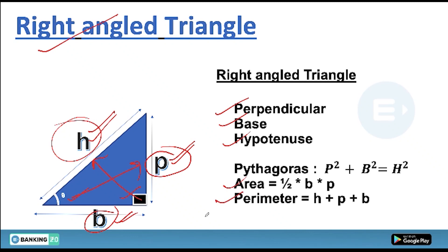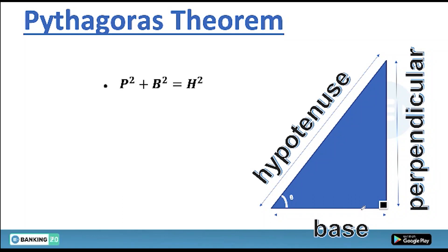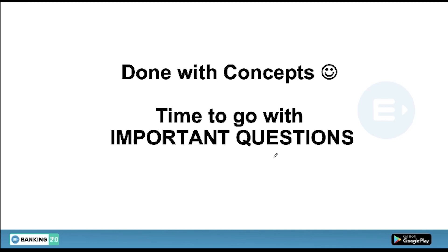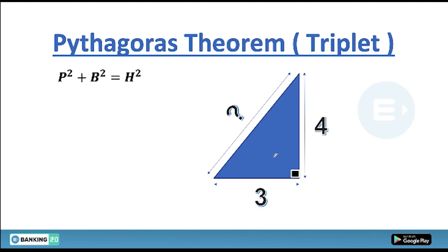The perimeter of a right-angle triangle is simply the sum of all boundaries: b + p + h. The Pythagoras theorem relates the sides: perpendicular² + base² = hypotenuse². Knowing any two sides, you can find the third. This theorem applies specifically to right-angle triangles.